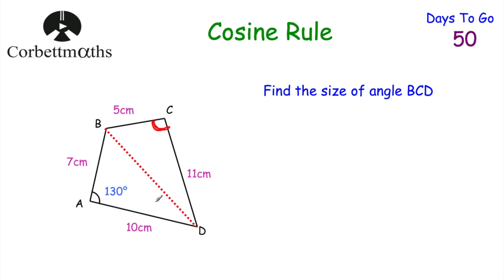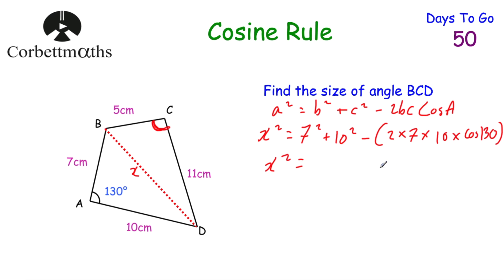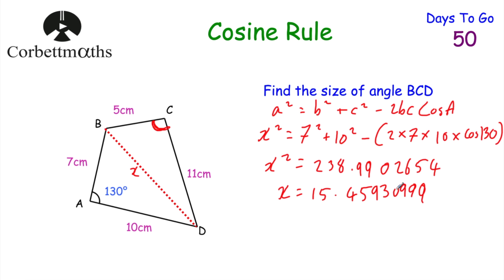Using the cosine rule on the lower triangle to find BD, which we'll call x: x squared equals 7 squared plus 10 squared minus 2 times 7 times 10 times cos(130). Typing this into the calculator gives x squared equals 238.9902654. Taking the square root, x equals approximately 15.459, so that's the length of BD.